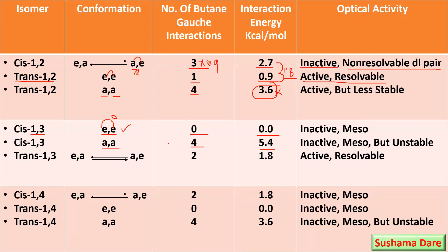So in total for the AA conformer of cis-1,3, there are 4 gauche interactions and the total energy is 5.4 kcal/mol — a highly unstable structure that does not exist. For trans-1,3, which is axial-equatorial or equatorial-axial, only one axial substituent is present, giving 2 gauche interactions. The energy of this molecule is 1.8 kcal/mol. So for cis-1,3-dimethylcyclohexane, the energy is 0 kcal/mol, and for trans-1,3-dimethylcyclohexane, the energy is 1.8 kcal/mol.